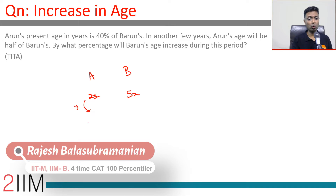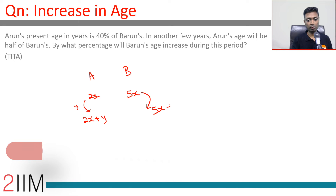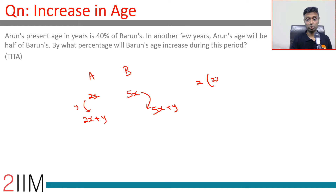Let's say y more years later. Arun would be 2x plus y years old, and Barun would be 5x plus y years old. The condition is that Barun's age is twice Arun's age at that point.